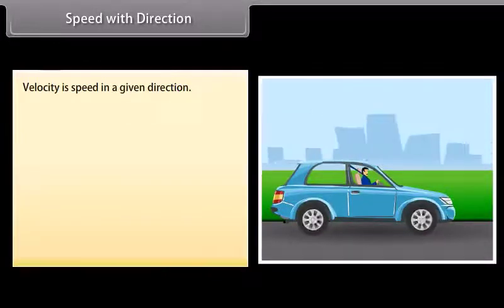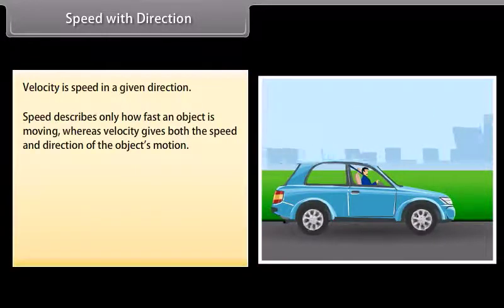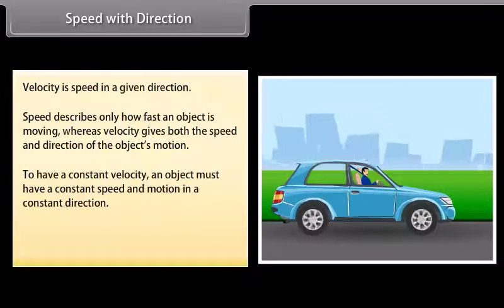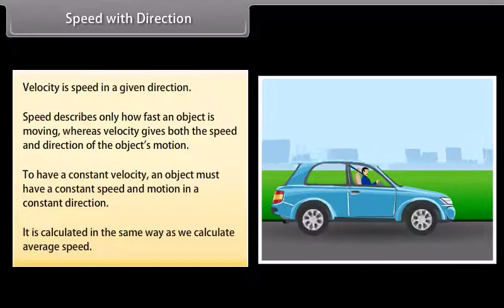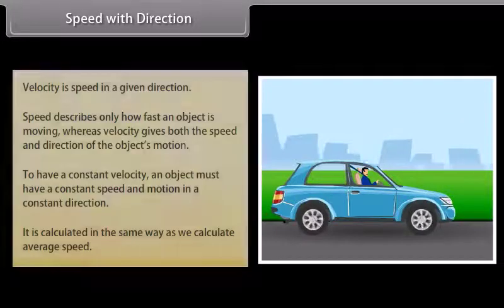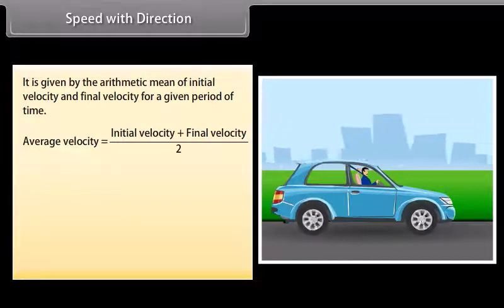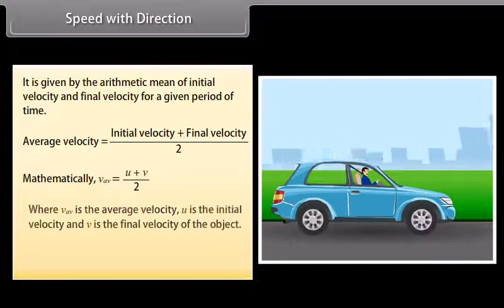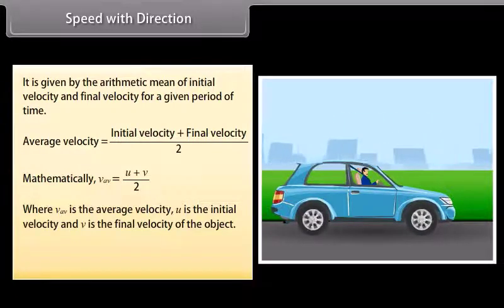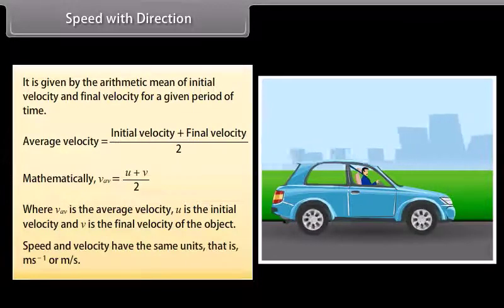Speed with direction. Velocity is speed in a given direction. Speed describes only how fast an object is moving, whereas velocity gives both the speed and direction of the object's motion. To have a constant velocity, an object must have a constant speed and motion in a constant direction. Average velocity is calculated as the arithmetic mean of initial velocity and final velocity: average velocity equals (U plus V) divided by 2, where U is the initial velocity and V is the final velocity. Speed and velocity have the same units — meters per second.